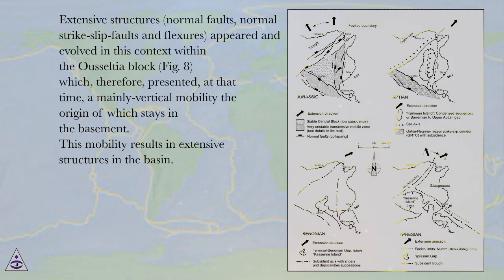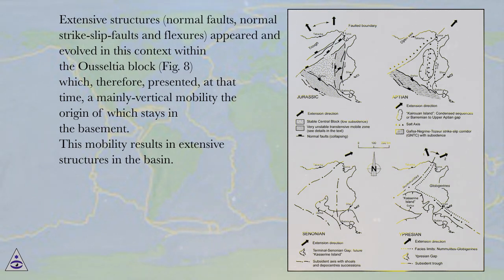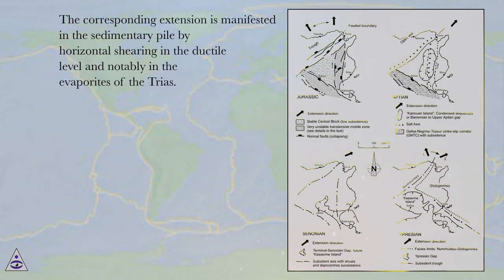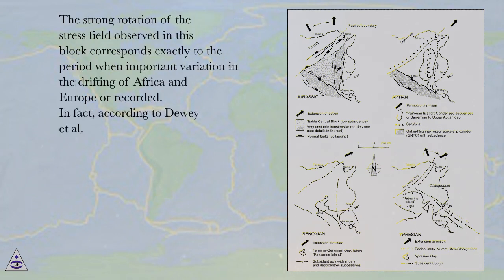Extensive structures — normal faults, normal strike-slip faults, and flexures — appeared and evolved in this context within the Usaltia block (Figure 8), which therefore presented, at that time, a mainly vertical mobility the origin of which stays in the basement. This mobility results in extensive structures in the basin. The corresponding extension is manifested in the sedimentary pile by horizontal shearing in the ductile level, notably in the evaporites of the Trias. The strong rotation of the stress field observed in this block corresponds exactly to the period when important variation in the drifting of Africa and Europe was recorded.